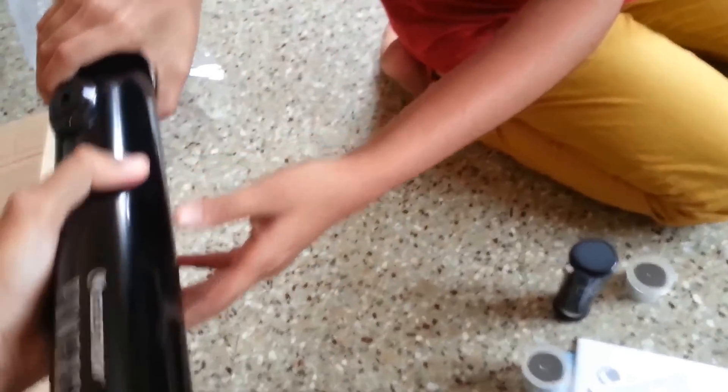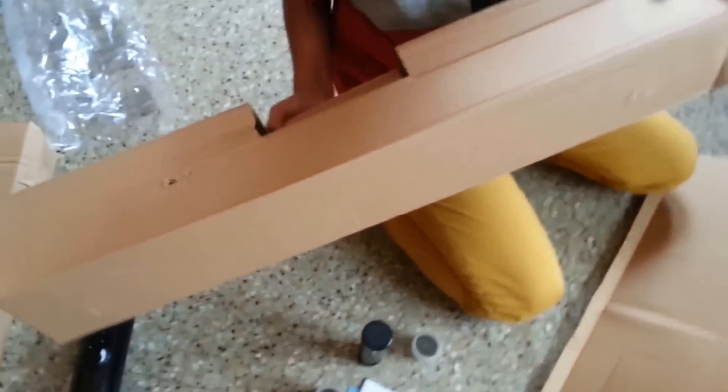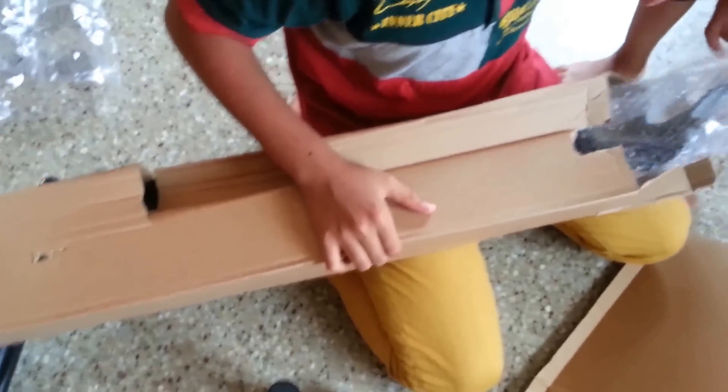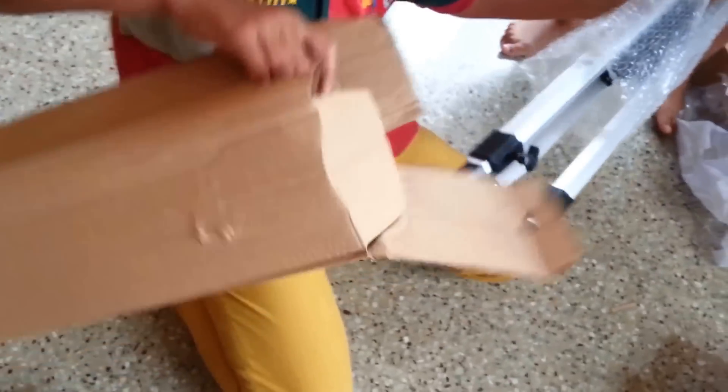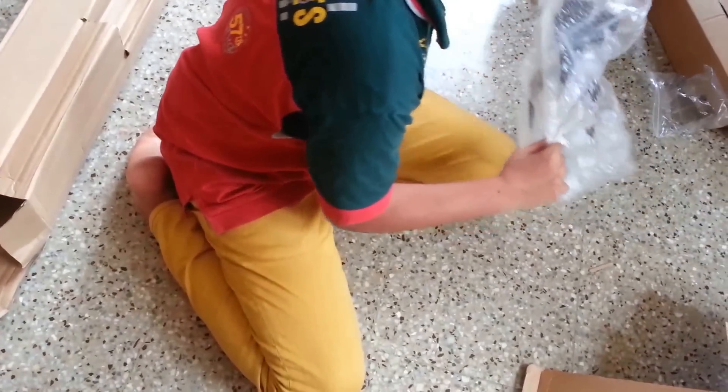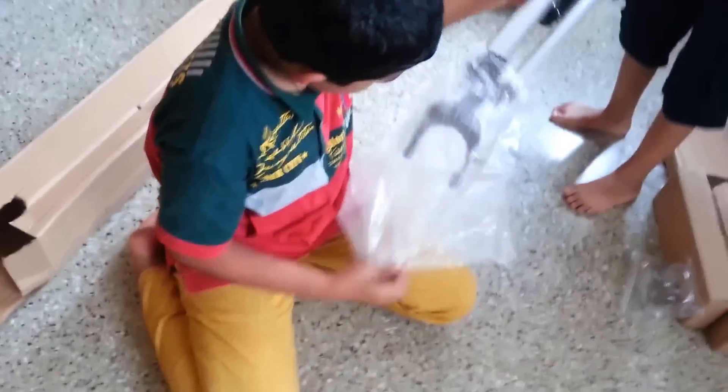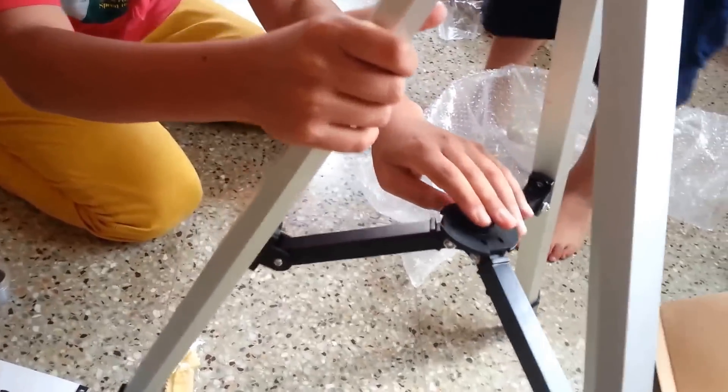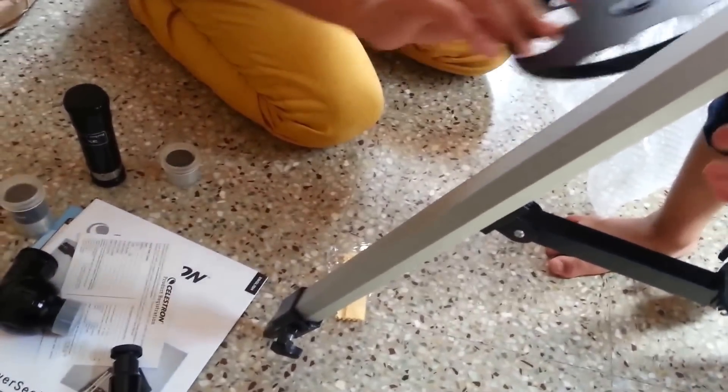Now let us take out the tripod. Now comes the tripod. This is the other box containing the tripod. Can you just open it up guys? Now here is the tripod. Very simple and easy to open it up. Now you have the tripod here. There is a screw given to assemble the eyepiece tray.